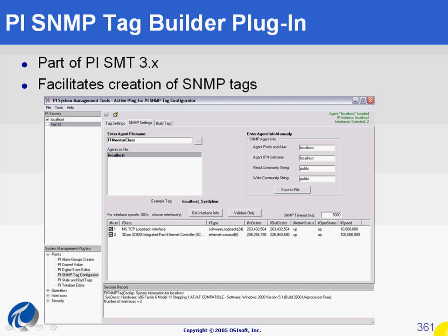Because configuration of SNMP tags implies a lot of parameters, we provide a plugin in our system management tools to do so. In the system management tools, you can find it under the points category. It is called the PI SNMP Tag Configurator. Now let's take a look at the three tabs composing this plugin.